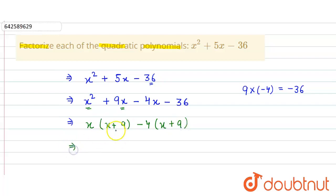Now take x + 9 common from the whole expression. So it is (x + 9)(x - 4). That's our answer.